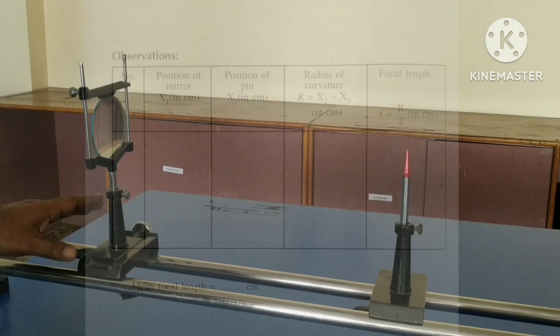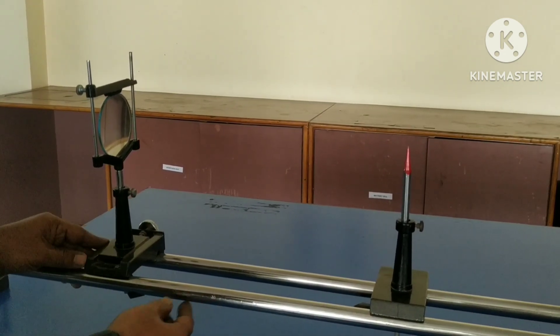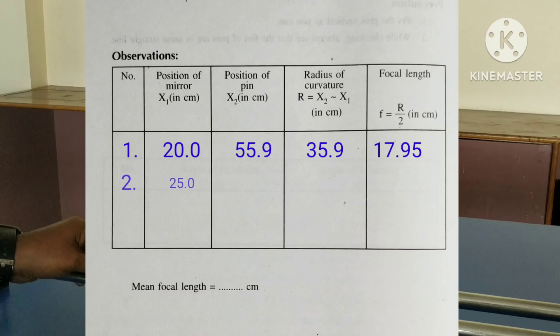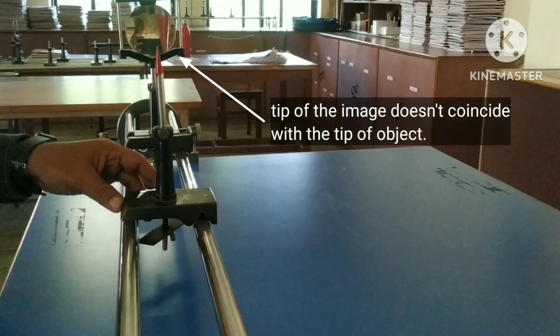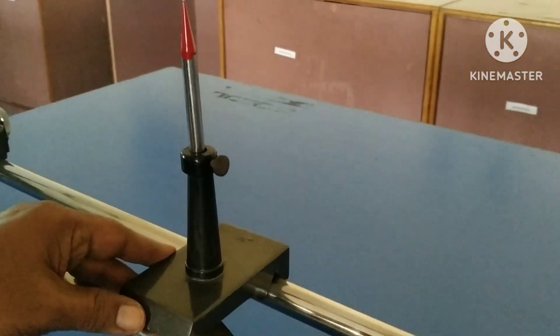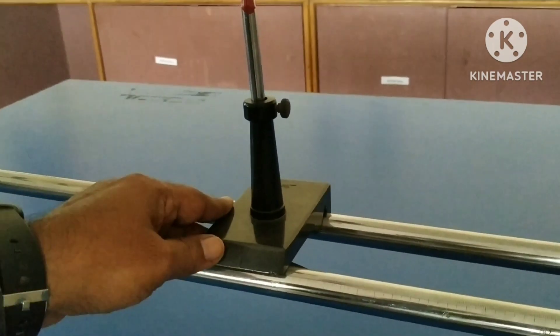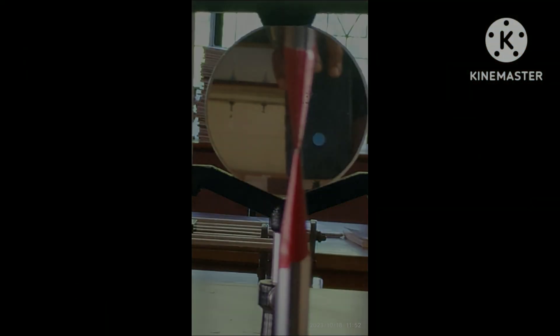You can repeat the experiment by changing the position of the mirror. Let it be at 25.0 cm. Now readjust the position of the pin to get the final image. Take five sets of readings and find the mean focal length. Write your final answer, correct to one decimal place.